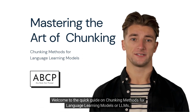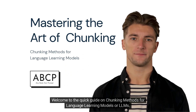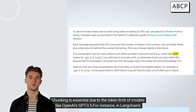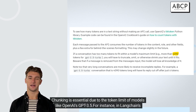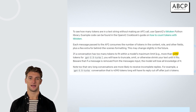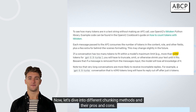Welcome to the quick guide on Chunking Methods for Language Learning Models, or LLMs. Chunking is essential due to the token limit of models like OpenAI's GPT-3.5. For instance, in LangChain's memory, the total words used must be less than 3000 words, fitting within 4000 tokens. Now, let's dive into different chunking methods and their pros and cons.